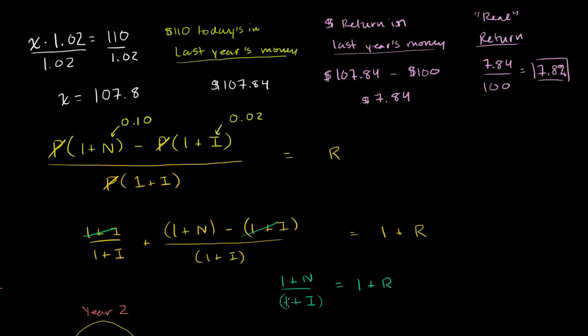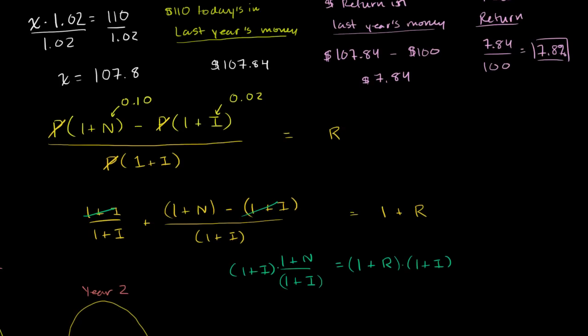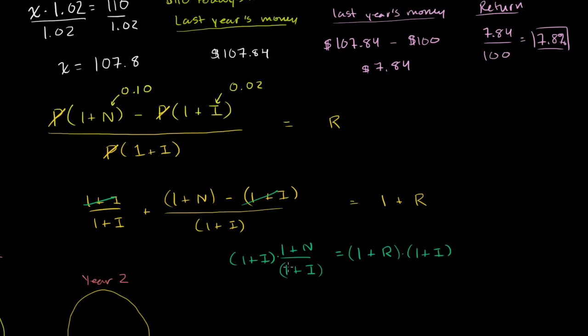And then we can multiply both sides times 1 plus i. Multiply both sides times 1 plus i. And we get an interesting result. And to some degree, this is a common sense result, and I want to show you this is completely consistent with everything we've been doing so far. These guys cancel out. And you get, when you compound by the nominal interest rate, that's the same thing as growing the real growth, and then that compounded by the rate of inflation, which actually makes a ton of sense.